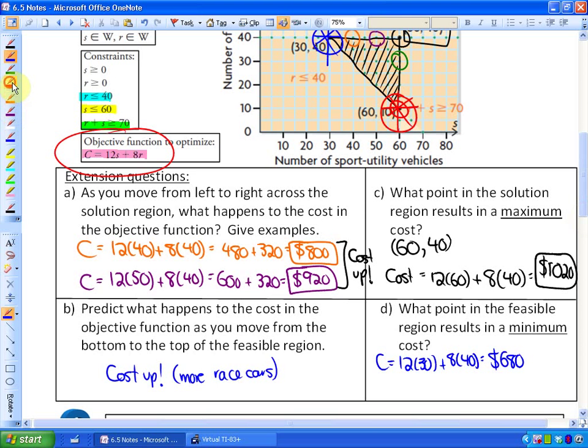And the cost of that red point where there's less race cars, but more sport utility vehicles. That would be the cost is 12 times 60 sport utility vehicles plus 8 times 10 racing cars. And that would be 720 plus 80. That would be $800. So, and this shouldn't again be that surprising. The combination that actually gives you less SUVs, it would be cheaper because SUVs are more expensive. So this would be your solution here. So what point? That would be the point 30, 40 is the cheapest.